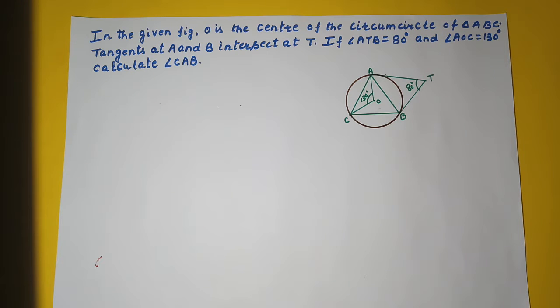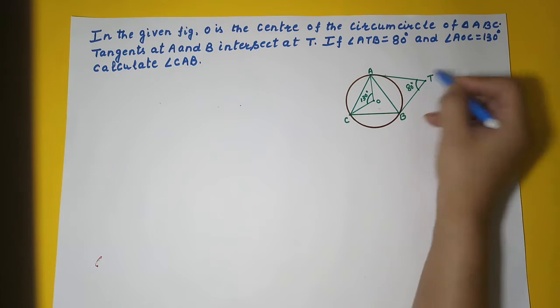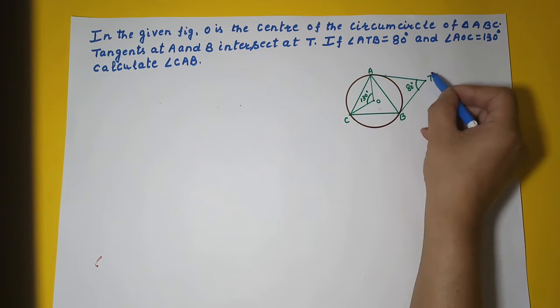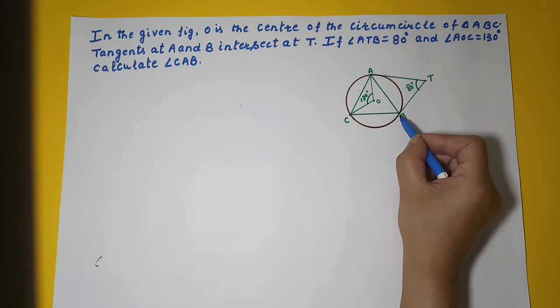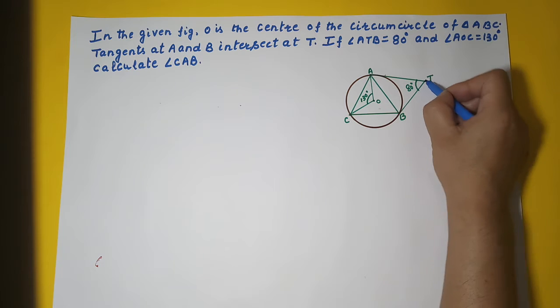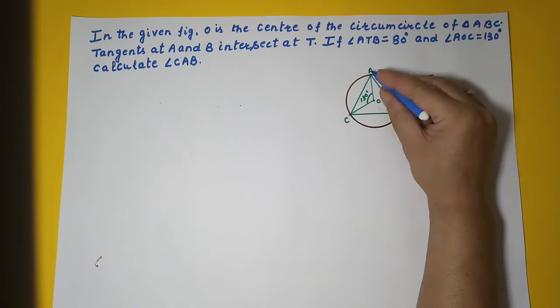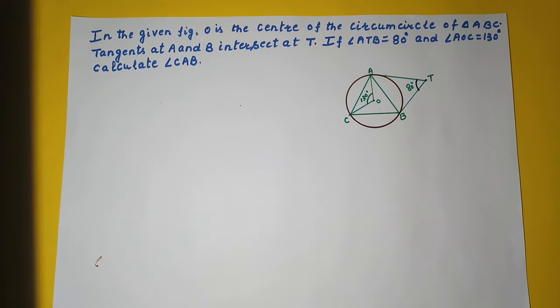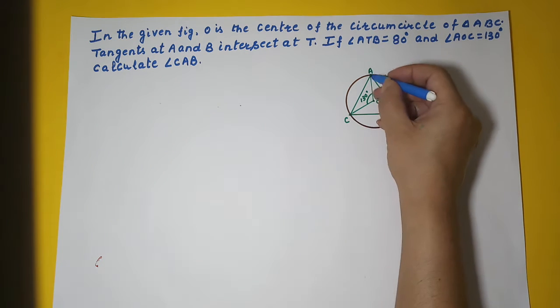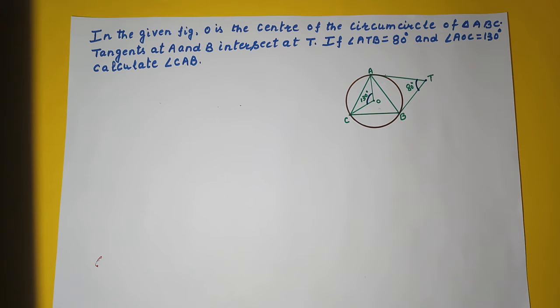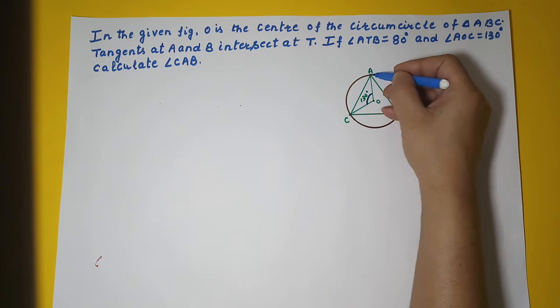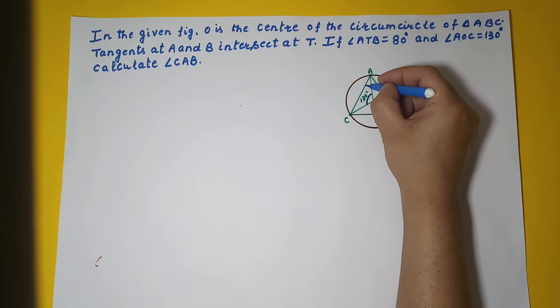Tangents at A and B intersect at T. TA is the tangent to this circle and TB is also the tangent to this circle, and they intersect at T. If angle ATB is 80 degrees and angle AOC is 130 degrees, he wants us to calculate angle CAB.